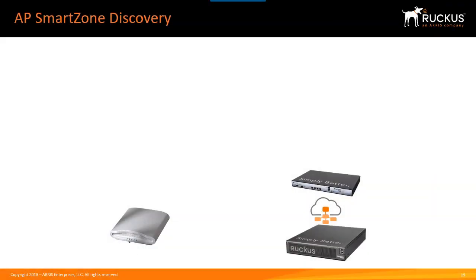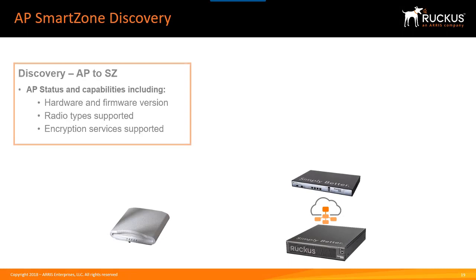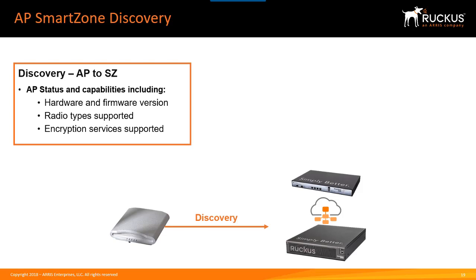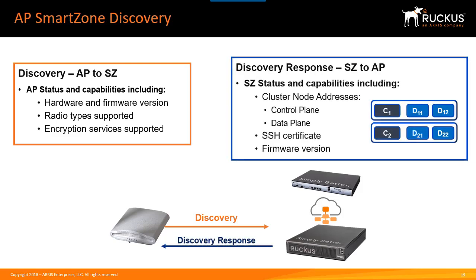We also see the access point listed in the main window — it's been placed in the staging zone. On a High Scale controller, when an AP first connects, it gets put into the staging zone in the default AP group by default, regardless of the domain structure configured. Once the AP has the controller address, it initiates a discovery process by sending information about its capabilities — hardware, firmware, radio types, encryption services. The controller responds with control plane addresses, data plane addresses if configured, and installs SSH certificates. If everything matches, the AP begins the registration and configuration process.